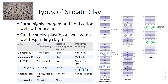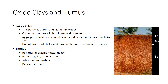You can see the amount of stickiness and swelling for different types of clays in the table. Vermiculite, which is commonly used in potting mixes, is chosen because it has high nutrient-holding capacity. Oxide clays, called sesquioxides, are tiny particles of iron and aluminum oxides. Oxides are common to old soils in humid tropical climates. Long periods of weathering leach out silica and some alumina, leaving behind the oxides. Oxide clays tend to aggregate into strong coated sand-sized beds that behave much like sand. Oxide clays do not swell, are not sticky, and have limited power to hold nutrients. Oxide clays are typical of oxisol soils, and the red color often found in oxisols reflects the reddish hues of iron oxides.